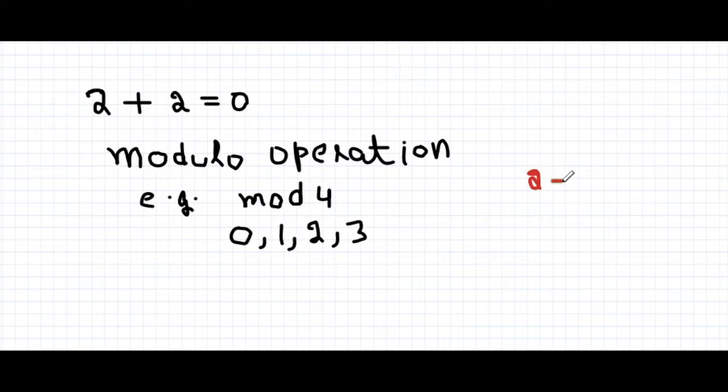For example, 2 plus 2, we have 4, and 4 does not appear in these four numbers. So we divide 4 by 4 and we get the remainder 0. It means 4 mod 4 is 0, so we replace 4 by 0.